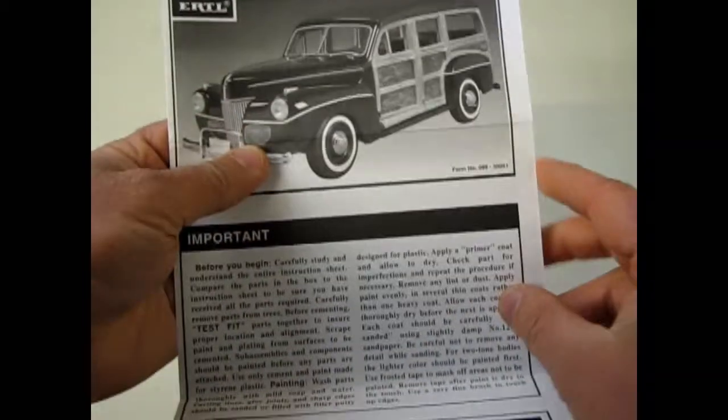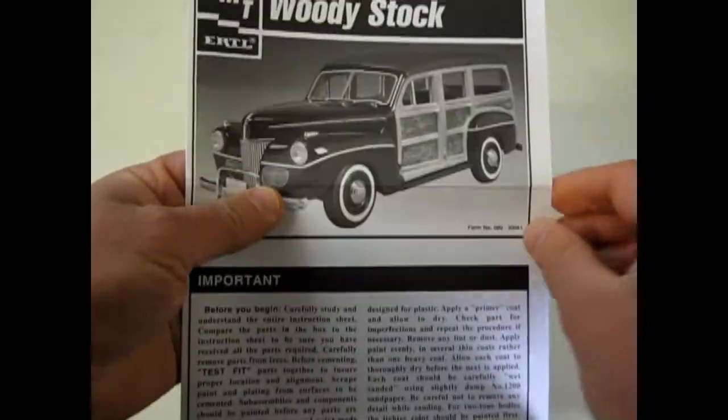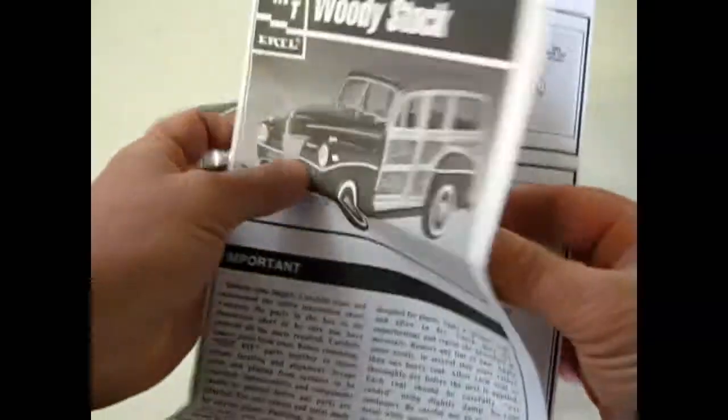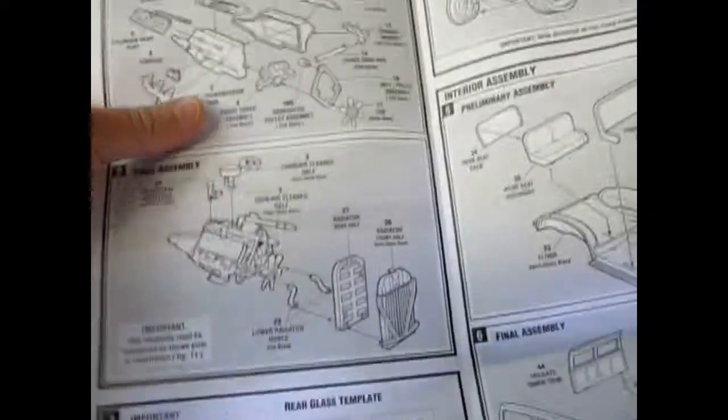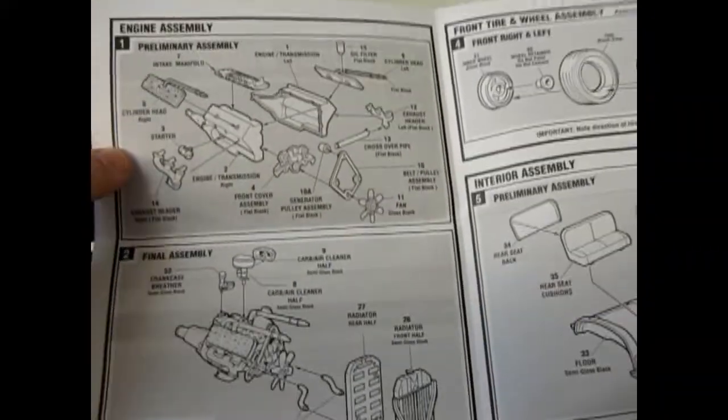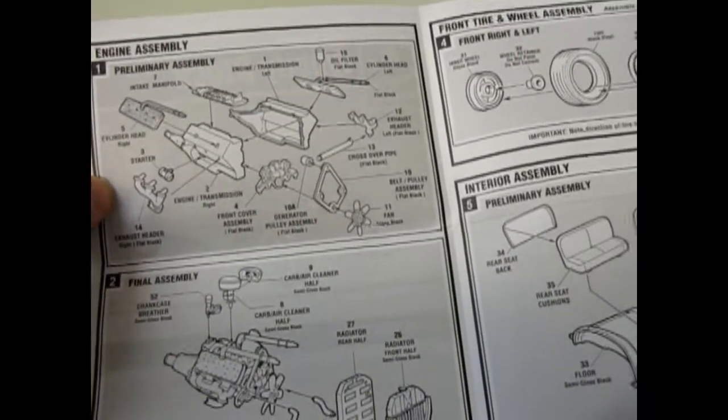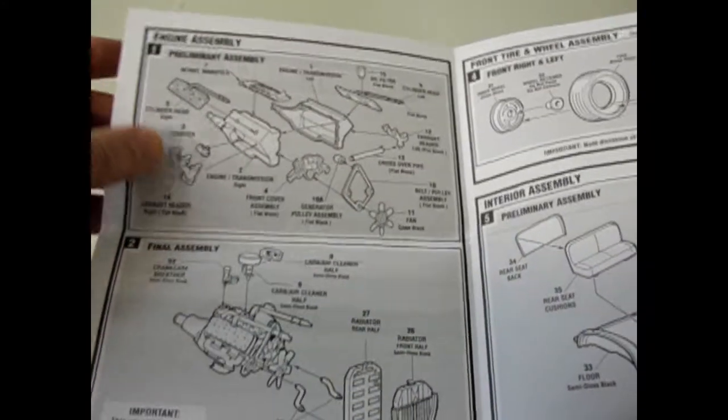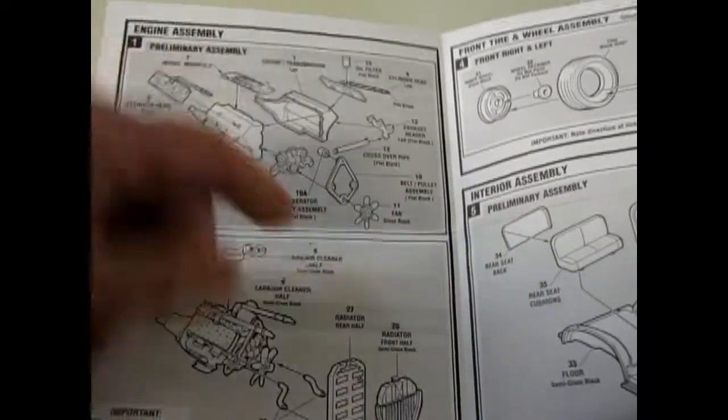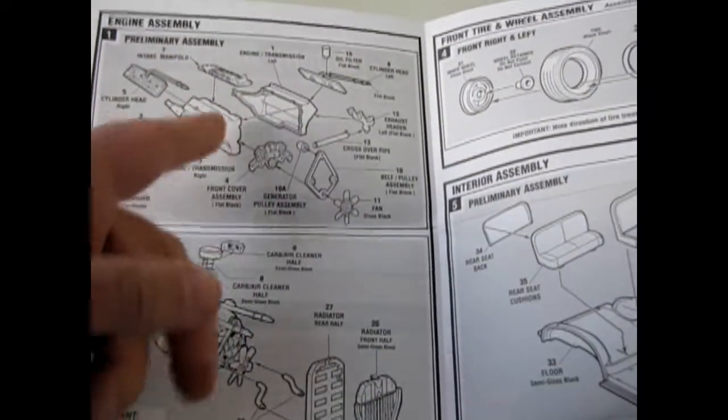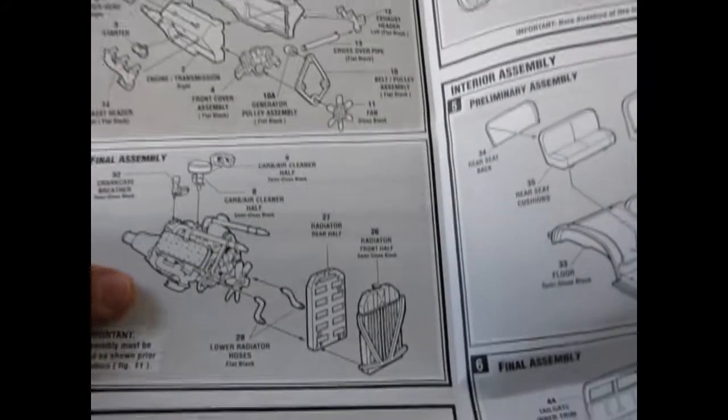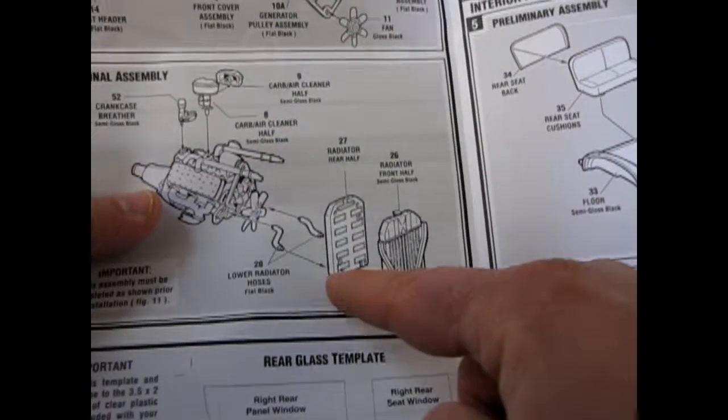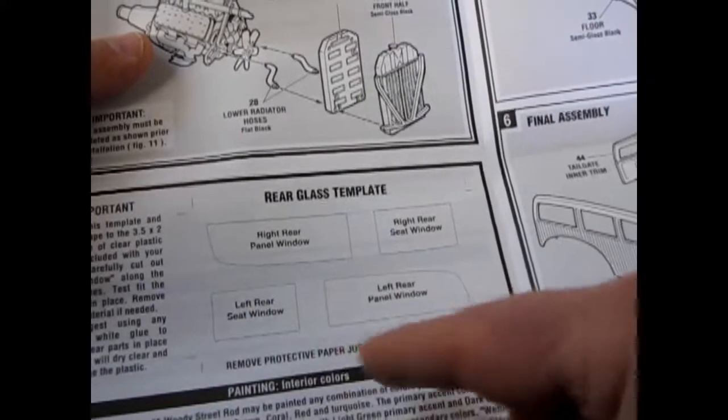So opening this up, you can see instantly the great level of detail. Now here you've got your 41 Ford engine and it's got the crossover pipes all separate. Everything is nice and separate in this. Two sides of the radiator, the radiator hoses.